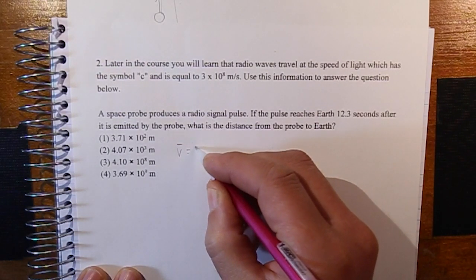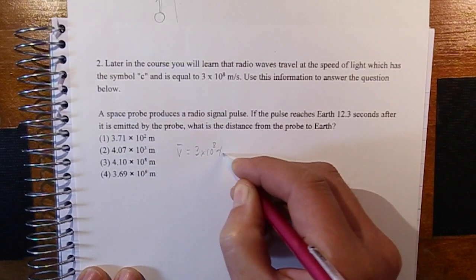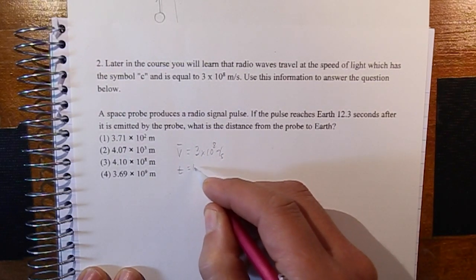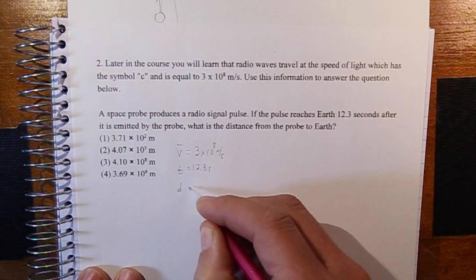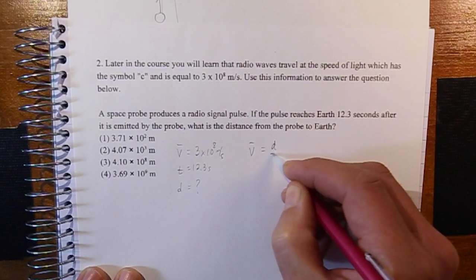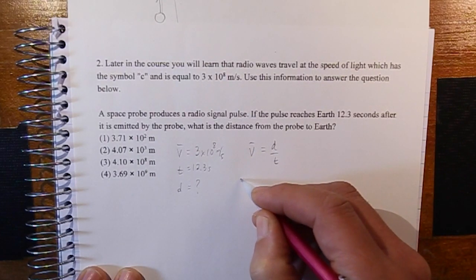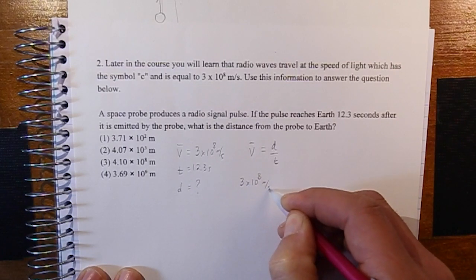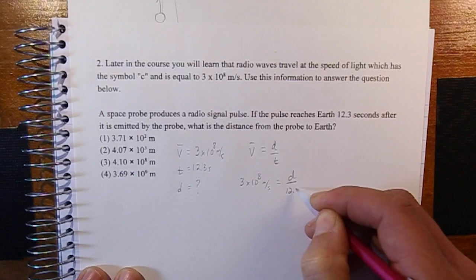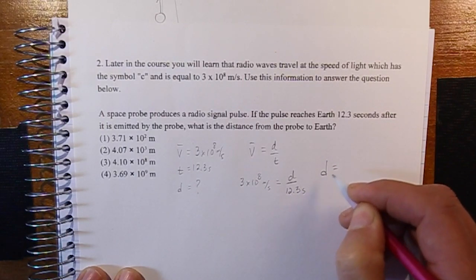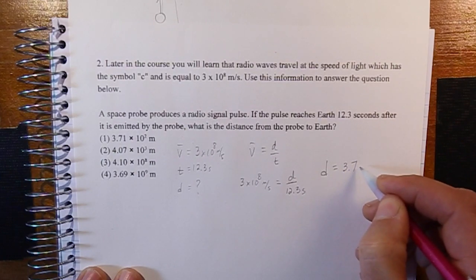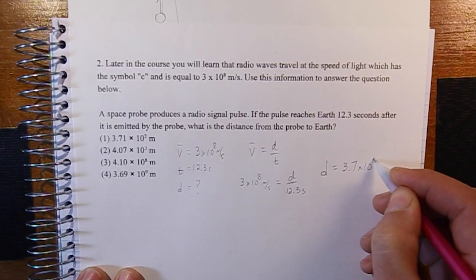Because the signal is traveling at a constant velocity, the average speed is 3×10⁸ meters per second. They're asking for the distance traveled, so using v = d/t: 3×10⁸ m/s = d / 12.3 seconds, which gives a distance of 3.7×10⁹ meters.